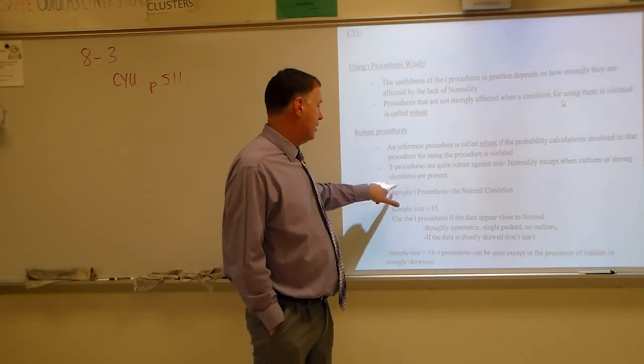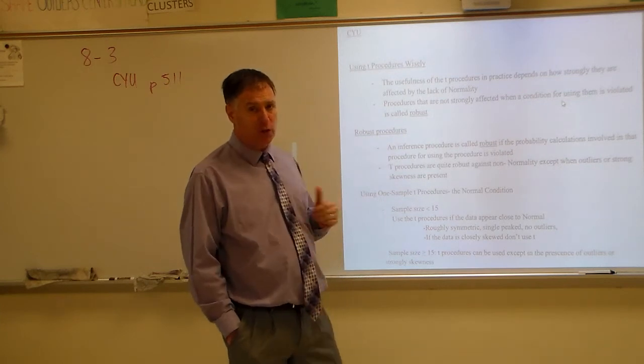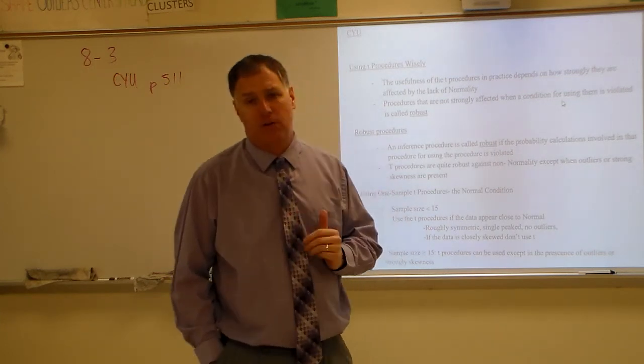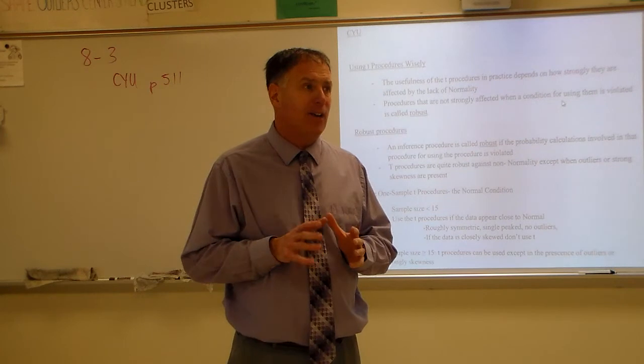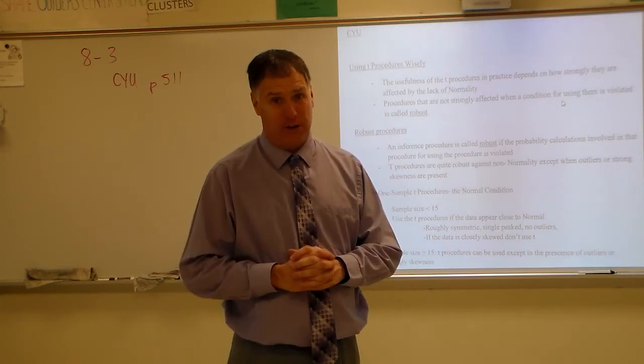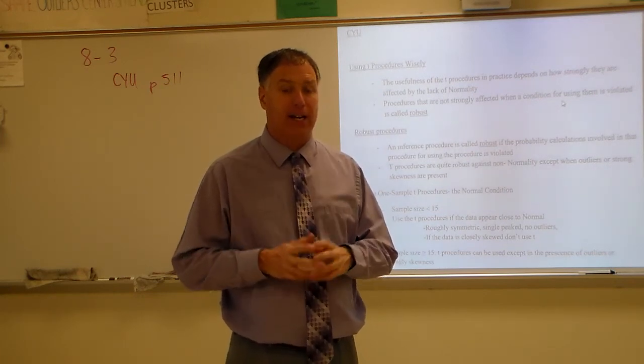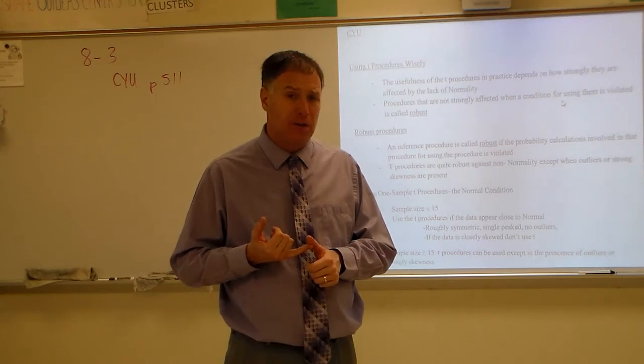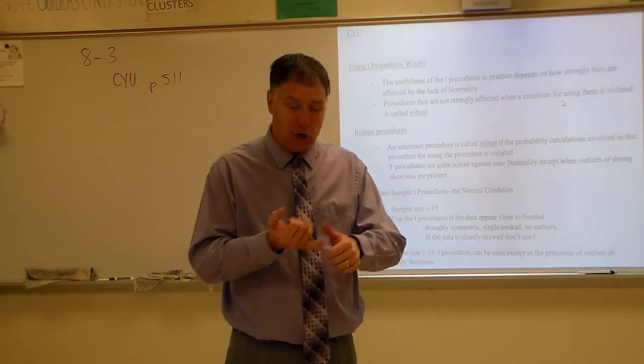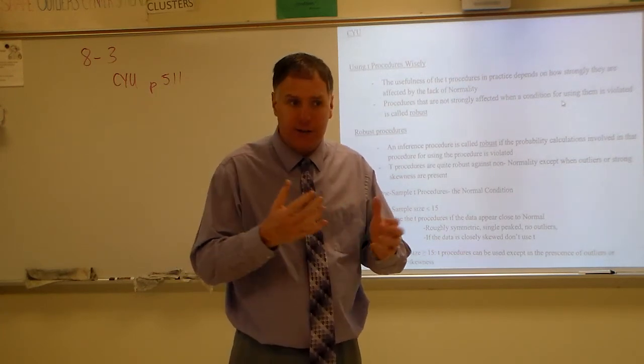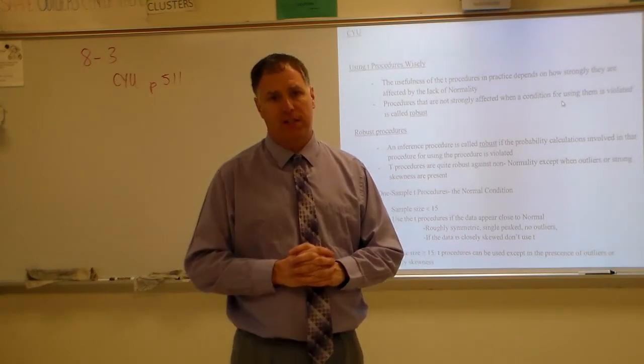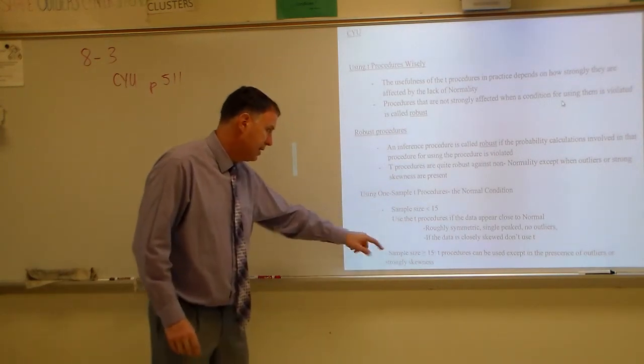Except when you have outliers or strong skewness. So they like to tell you right away that N has to be greater than or equal to 30. And then when N isn't greater than or equal to 30, you look at a graph. And you say, okay, is there strong skew? Are there outliers? If there's no strong skew and no outliers, then we can proceed.